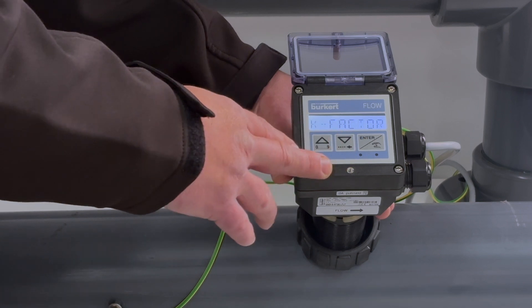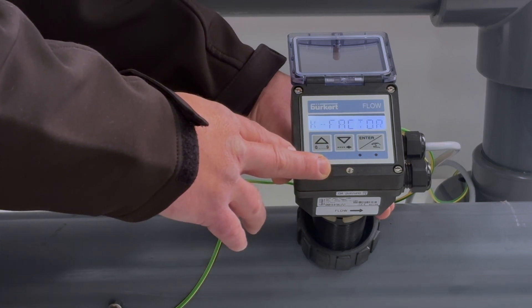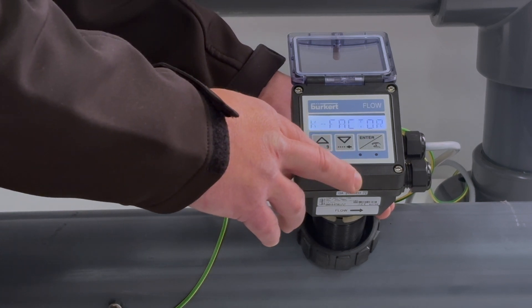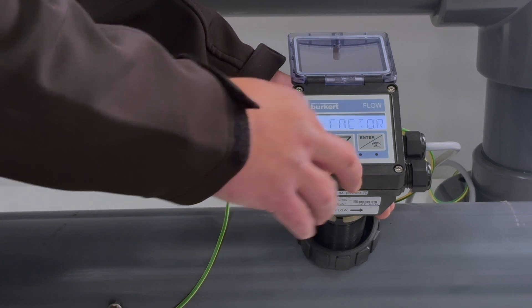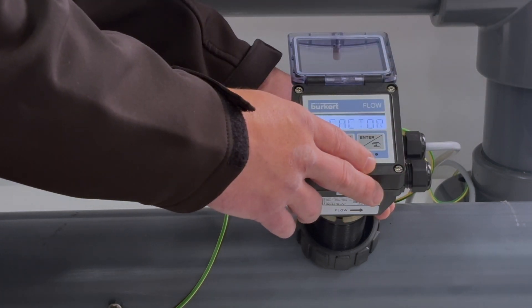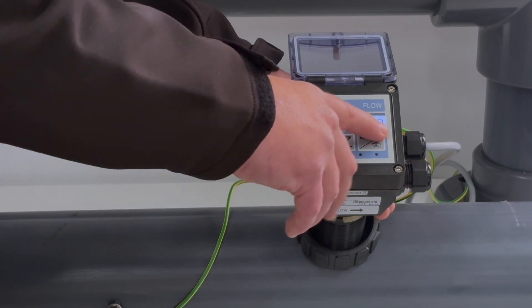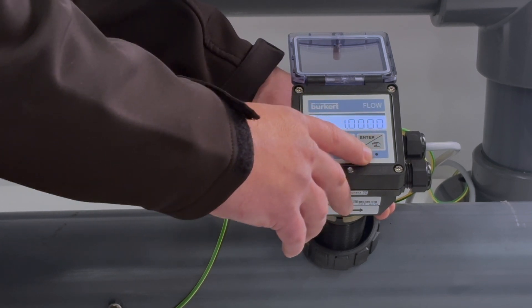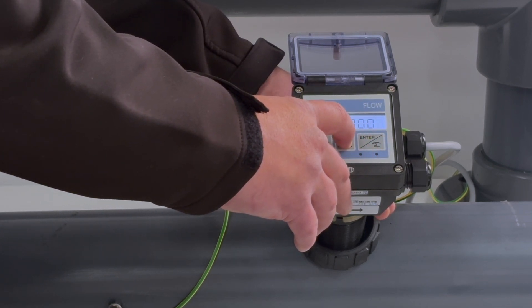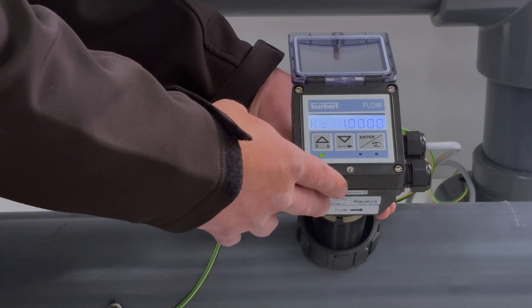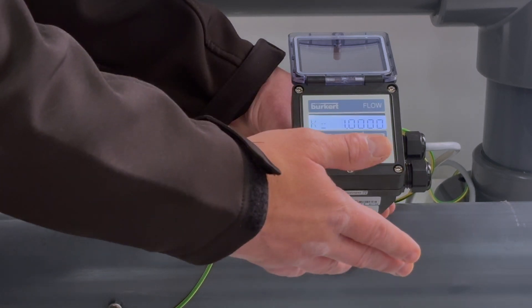I'm then going to enter a predetermined k-factor which can be found on our SO20 data sheet in this case, relative to our pipework at DN100. I'm going to enter that k-factor by pressing enter, and then I can enter the k-factor of my choice. In this case I'm just going to leave it at 1.